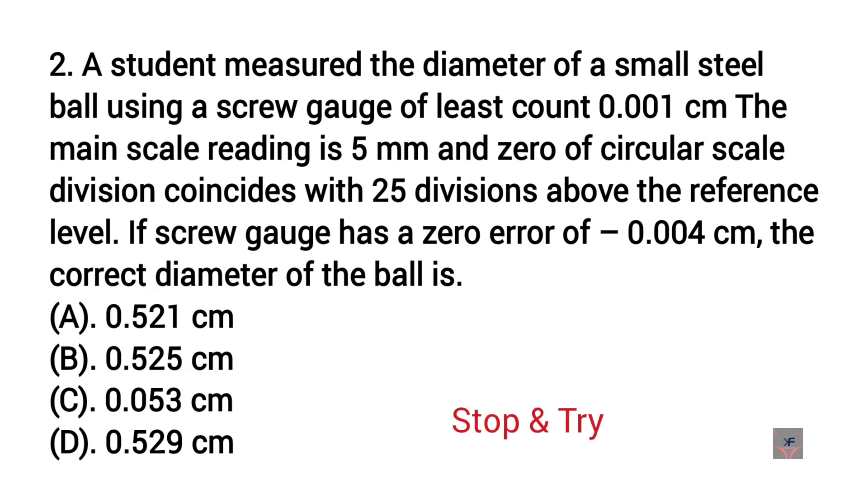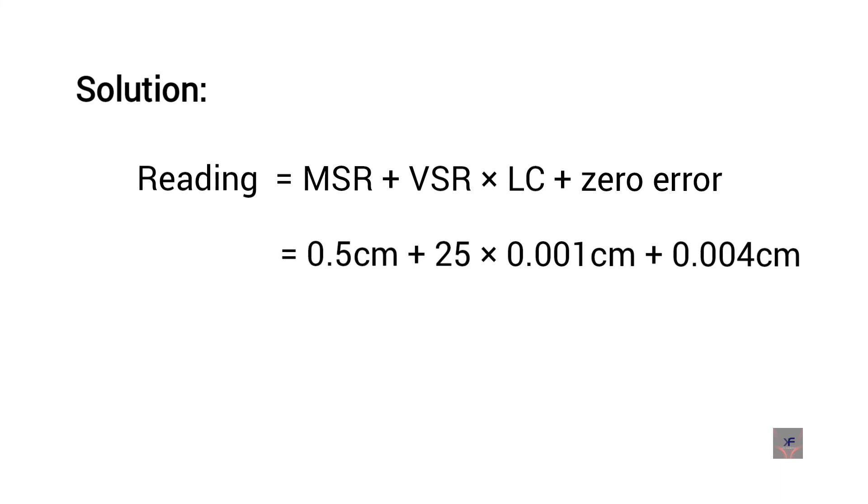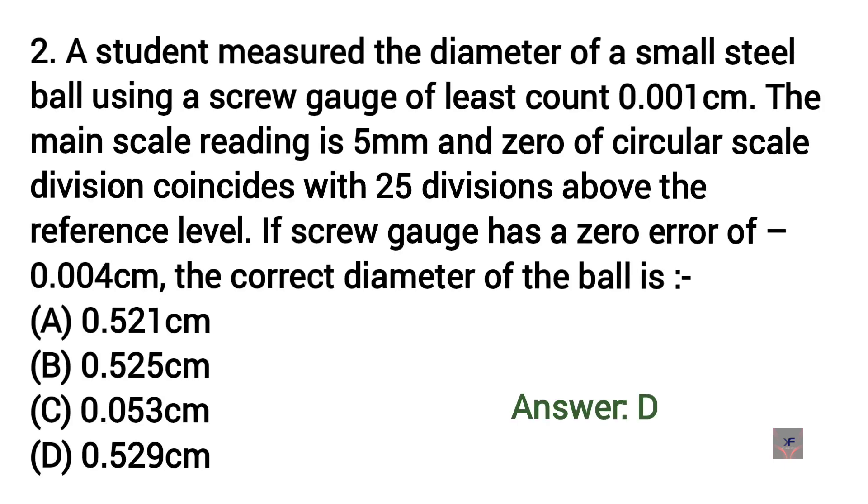Find the answer. Now let's see it. Reading of screw gauge equals MSR plus VSR times LC plus zero error, which equals 0.5 centimeter plus 25 times 0.001 centimeter plus 0.004 centimeter, which equals 0.529 centimeter. So the correct option is D.